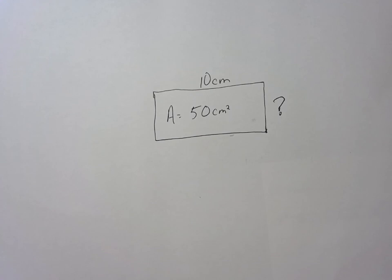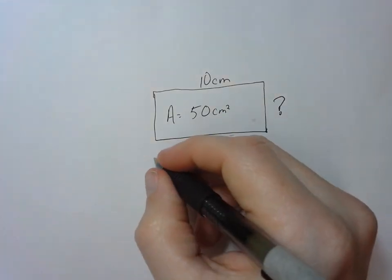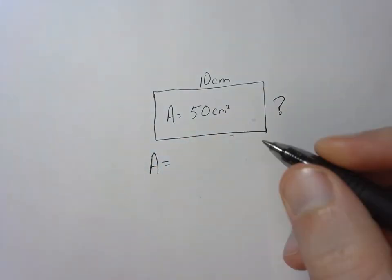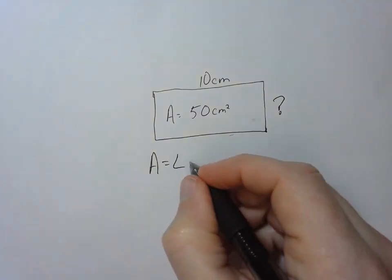To find the missing side of a rectangle when we know the area and the length of the other side, we need to know our area formula: area equals length times width.